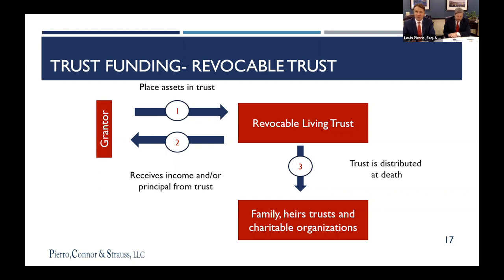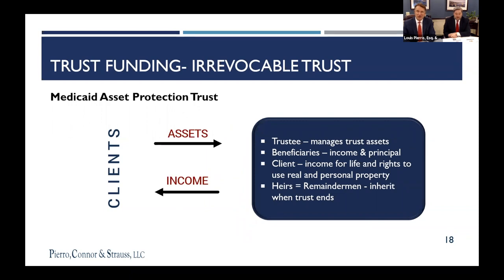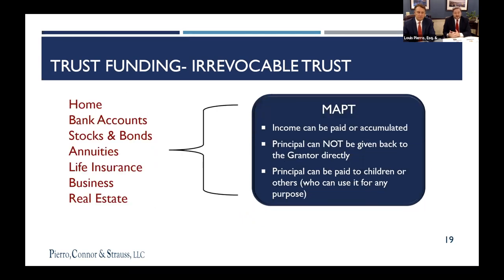We want everything in the trust to avoid probate. For the Medicaid Asset Protection Trust — the MAPT — an irrevocable trust, it's a little different. You're not necessarily going to put every asset you own in. This really depends on timing and health. Generally speaking, we almost always start with the home. If you're in your late 50s or early 60s and you want to get out in front of this, we create the trust and put the home in there. It doesn't affect anything for you on a daily basis — you still have the right to live there, you're still responsible for the carrying costs, and if it's sold, you still get your capital gains exemption.